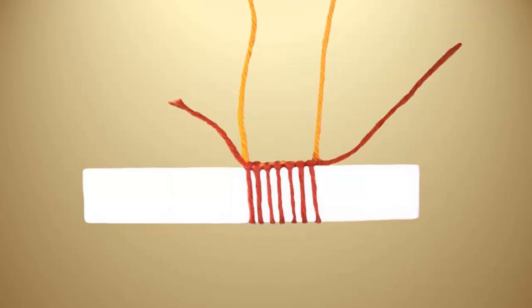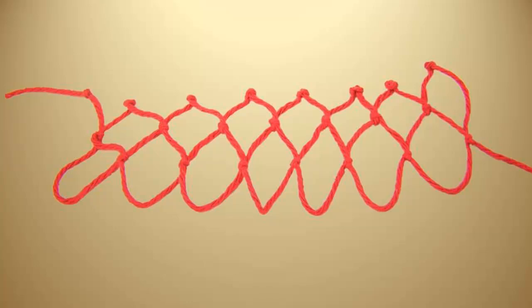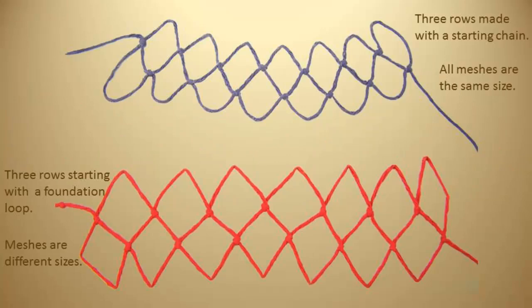When the first row of meshes are tied over a foundation loop and the foundation loop is removed, the loops that were tied around the foundation loop are slightly bigger than the loops found in other rows which were tied using the same size mesh stick.